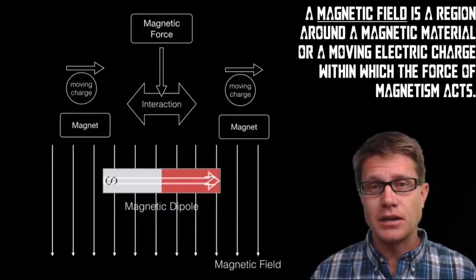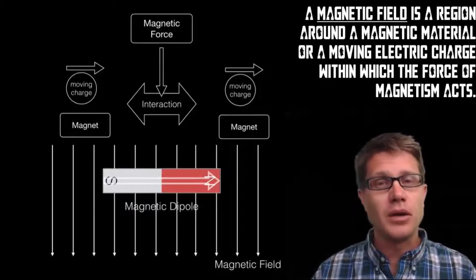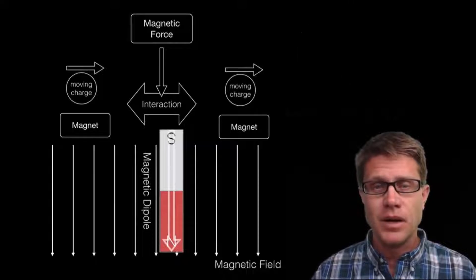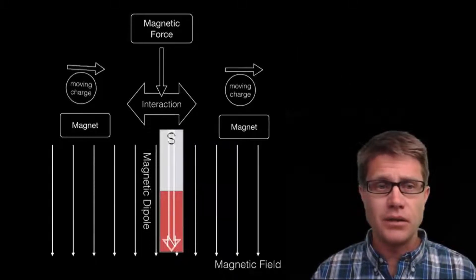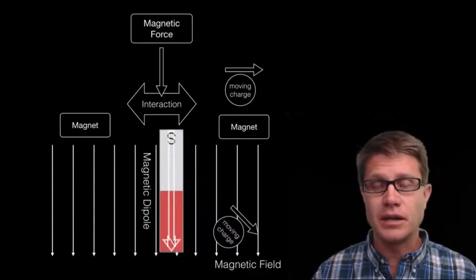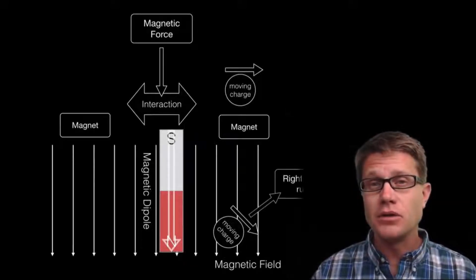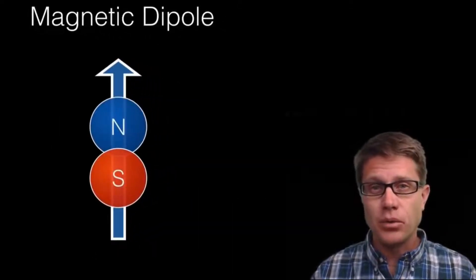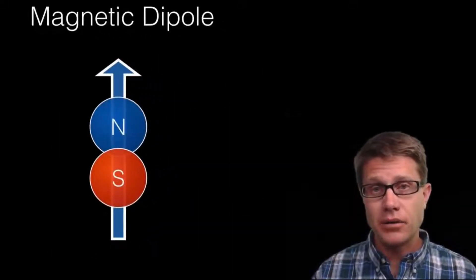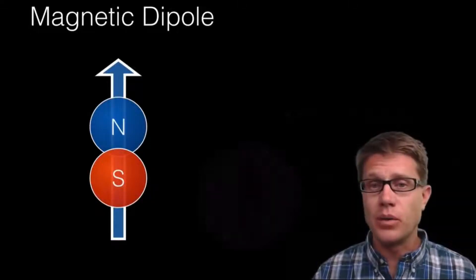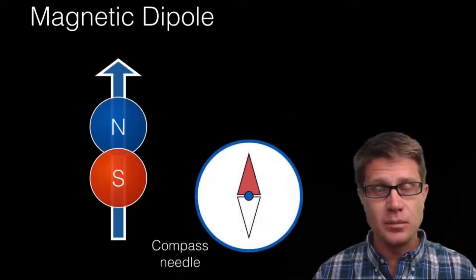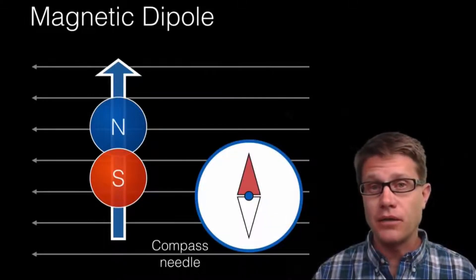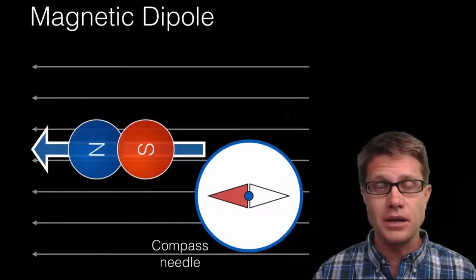Now let's say we put that magnet in a magnetic field. There will be a magnetic force that is going to cause it to orient towards that magnetic field. But it is not just magnets that are influenced by other magnets. If we have a moving charge moving through a magnetic field there will be a magnetic force on that, and we can use the right hand rule to figure out where that force is going to be. A magnetic dipole has a north and a south — examples include the Earth and a compass needle, which is simply a tiny little magnet. If we put these inside a magnetic field there will be a magnetic force which causes them to orient towards that field.